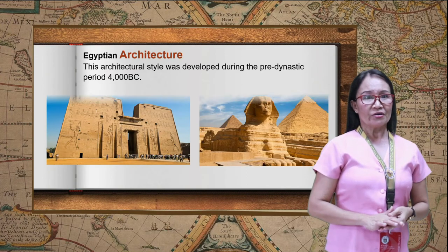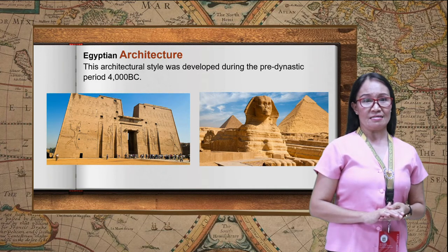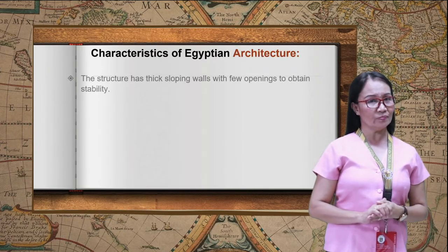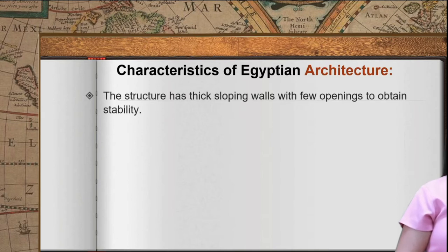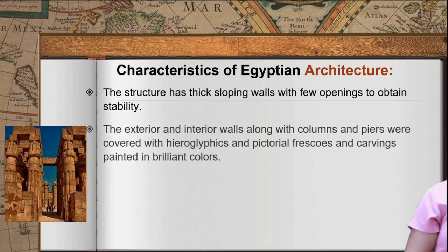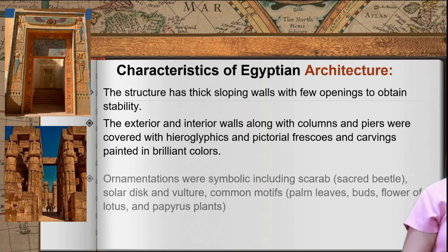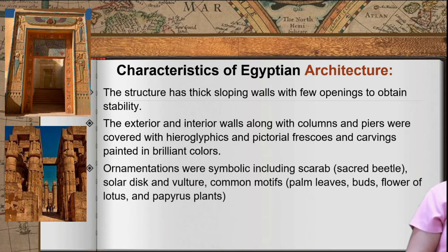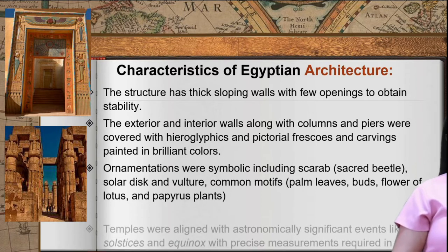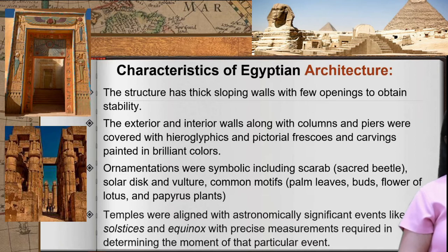Egyptian architecture was developed during the pre-dynastic period around 4000 BC. Characteristics include: thick sloping walls with few openings to obtain stability; exterior and interior walls, along with columns and piers, covered with hieroglyphics and pictorial frescoes and carvings painted in brilliant colors; ornamentation that was symbolic, including scarabs, solar discs, and vultures as common motifs; and temples aligned with astronomically significant events like solstices and equinoxes.